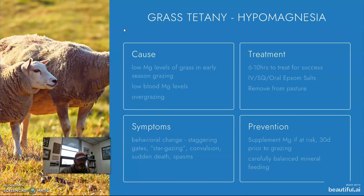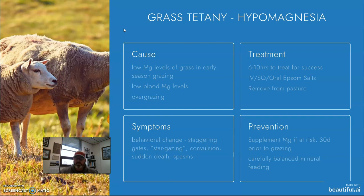Symptoms of grass tetany include very distinct behavioral changes — animals will stagger and do what's called stargazing, which is exactly how it sounds: they'll just stand there and stare at the sky. Sometimes convulsions, spasms, and sudden death occur. You need to initiate treatment within 6 to 10 hours of onset if you're going to be successful, using intravenous or subcutaneous Epsom salts. If you catch it early, you can go oral, then get them off the pasture, into the barn, and control their feeding better.